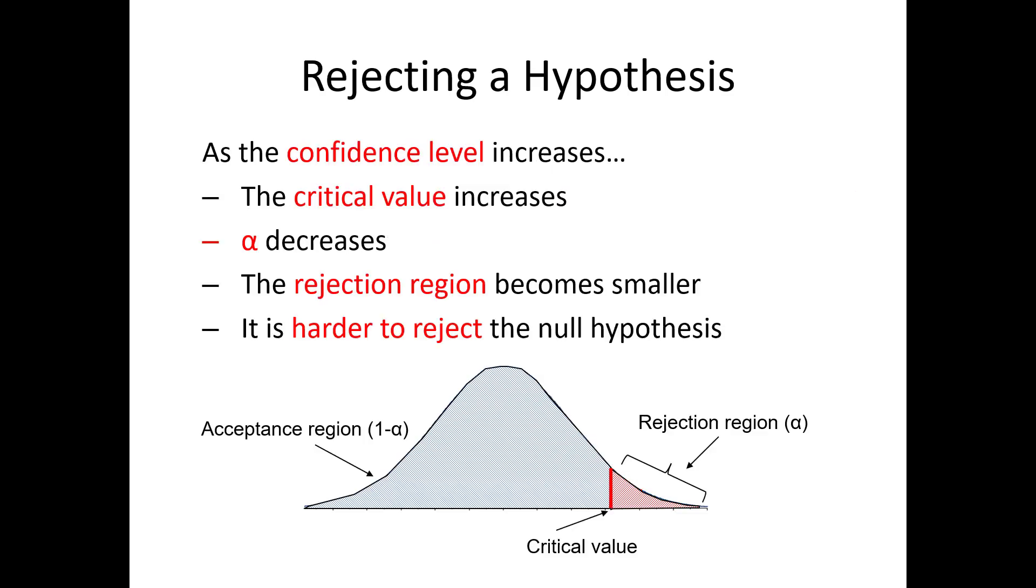Let's put all this together. As the confidence level increases, the critical value increases, that is, moves to the right in this diagram, the value of alpha decreases, and the rejection region becomes smaller. This makes it harder to reject the null hypothesis.